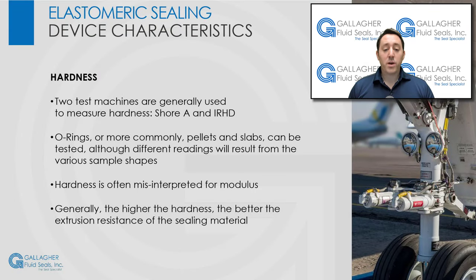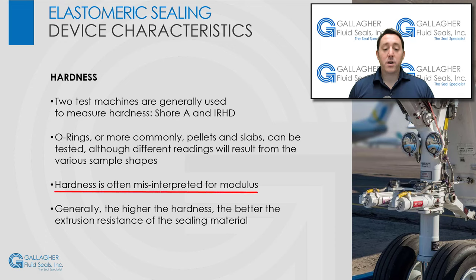You may be wondering how hardness is measured. Two test machines are generally used: Shore A and IRHD. Since the indenters are different at each machine, slightly different results are obtained, although the ratings are roughly comparable. O-rings, or more commonly pellets and slabs, can be tested, although different readings will result from the various sample shapes. Hardness is often misinterpreted for modulus. An elastomer with any set hardness value can generally be formulated to a number of different moduli. Generally, the higher the hardness, the better the extrusion resistance of the sealing material.